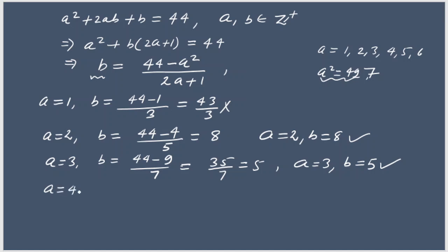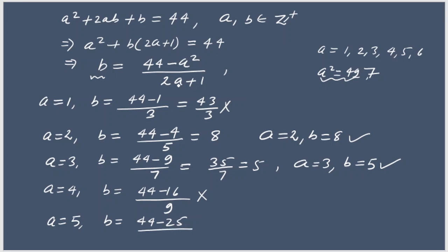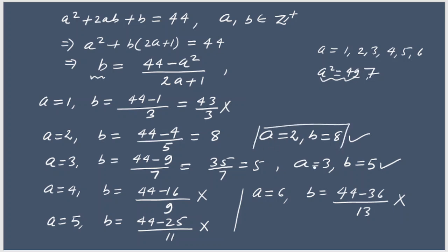If a = 4: b = (44 − 16) / (2×4 + 1) = 28/9, not an integer. If a = 5: b = (44 − 25) / (2×5 + 1) = 19/11, not an integer. If a = 6: b = (44 − 36) / (2×6 + 1) = 8/13, not an integer. So the only possible solutions are a = 2, b = 8 or a = 3, b = 5.